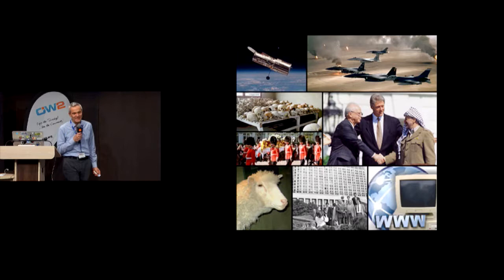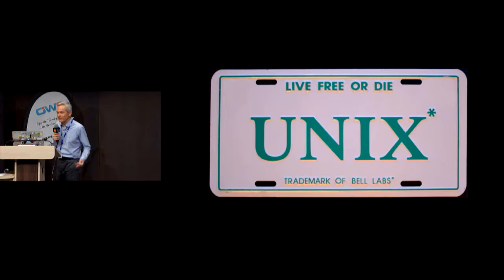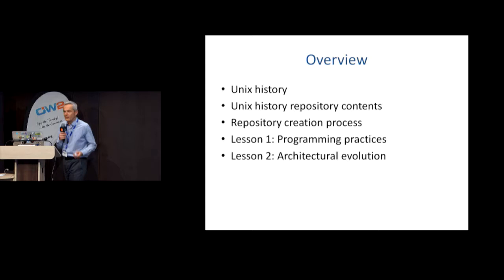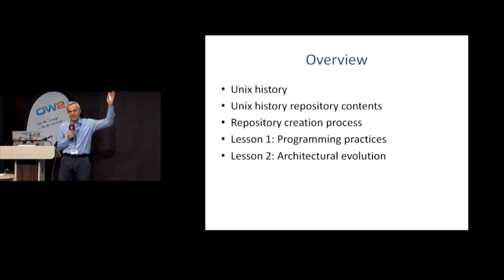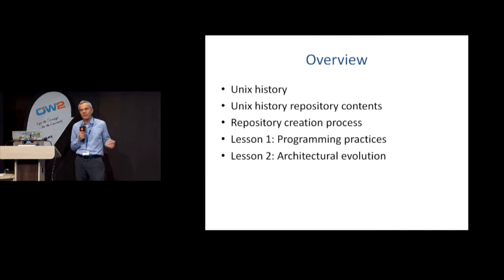What is half a century? This is Wikimedia's view of half a century from the 1970s until today. Unix has had a similar history, becoming 50 years old in a couple of years and seeing a similar rate of change. I will present an overview of Unix history by building a repository — available on GitHub — containing complete artifacts and a complete timeline from the inception of Unix until today. I will describe what you'll find in the repository, how it was created, and lessons drawn from it: how programming practices evolved and how the architecture of the system evolved over the years.